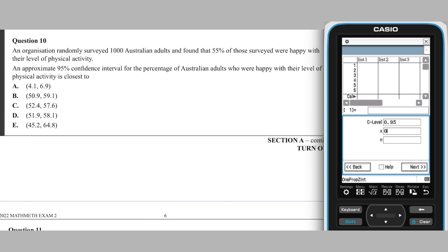Enter the confidence level as 0.95, the x value as 550, or just to be sure, 0.55 times 1000, and enter N as 1000. Tap Next to see the lower and upper bounds of the interval, which corresponds to answer D.